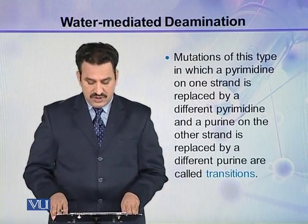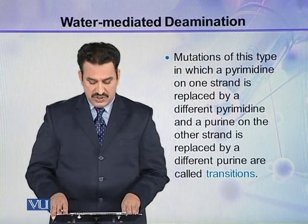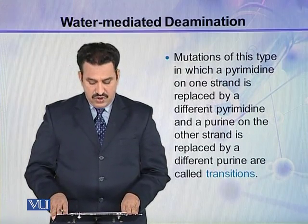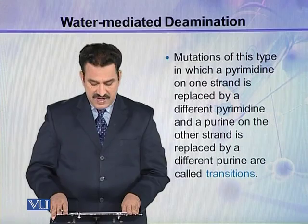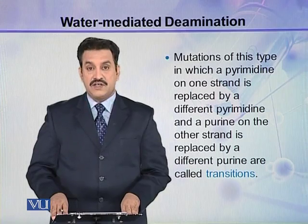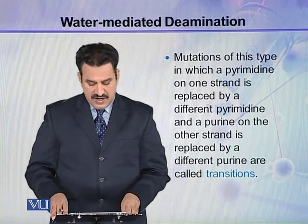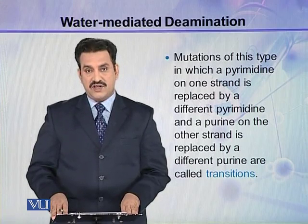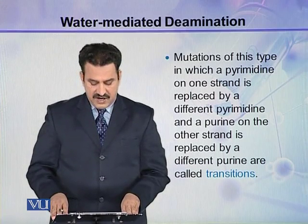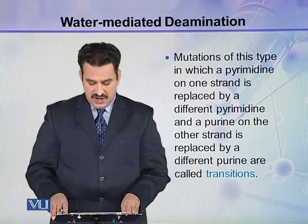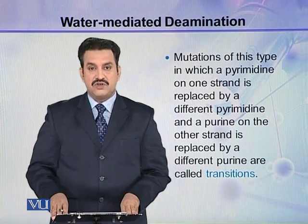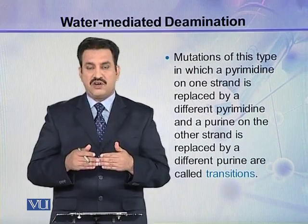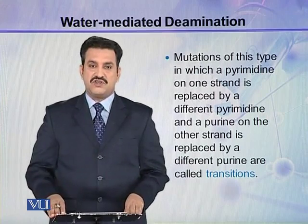Mutations of this type — in which a pyrimidine on one strand is replaced by a different pyrimidine and a purine on the other strand is replaced by a different purine — are called transitions. Such mutations are called transitions.